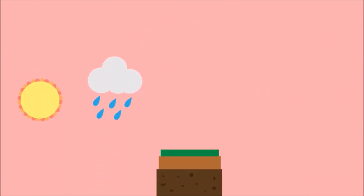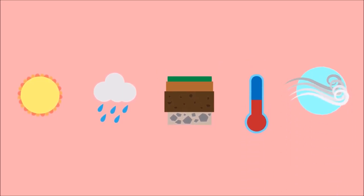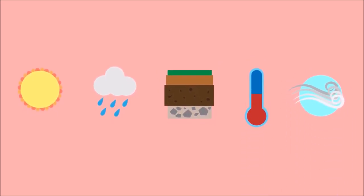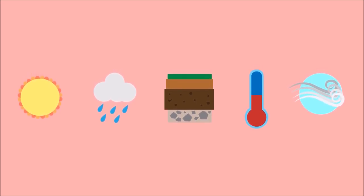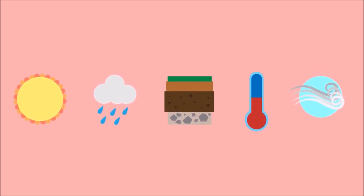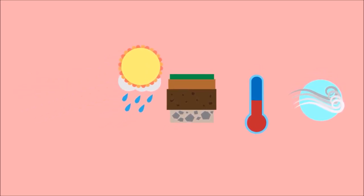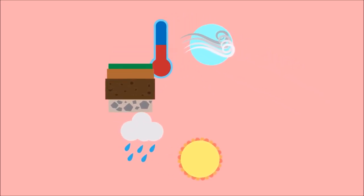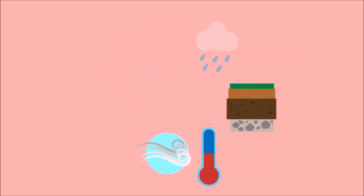Sunlight, precipitation, soil composition, temperature, and air currents are all examples of abiotic components that can be found within an ecosystem. While each of these components is important by itself, how they interact with each other also greatly influences their environment.